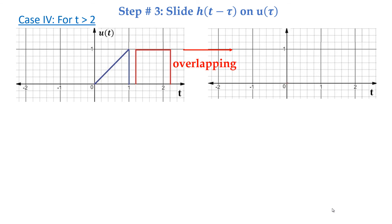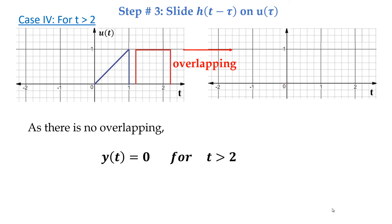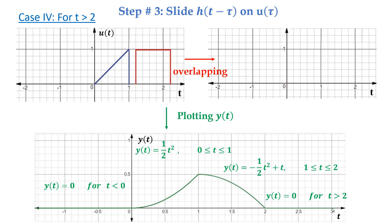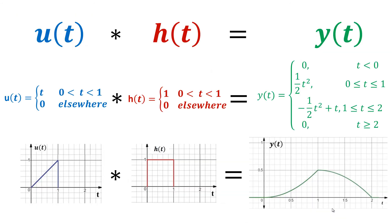Case four: for time t greater than 2, as there is no overlapping, y(t) equals 0 for time t greater than 2. By plotting, we have the output y(t) as a straight line along the time axis for time t greater than 2. These are the final results: u(t) is the input signal, h(t) is the impulse response of the linear time invariant system, and y(t) is the output.